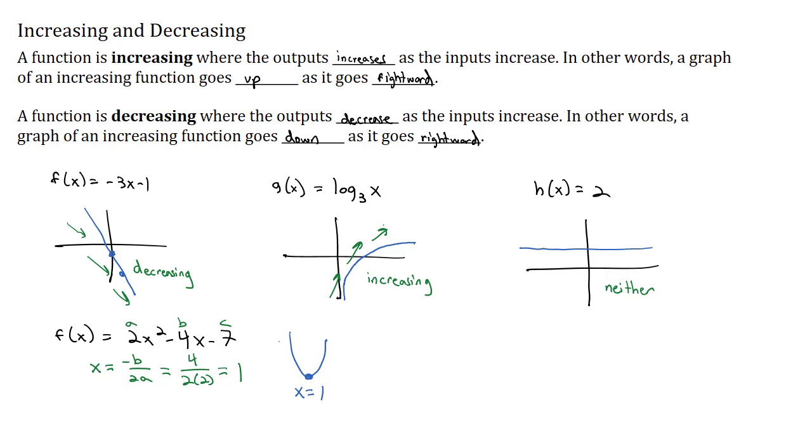Which means before x is equal to 1, the graph is decreasing. It is decreasing, in interval notation, from negative infinity all the way up to the number 1. And then it switches at 1 to now be going up, going rightward. It is increasing from 1 all the way up to infinity.